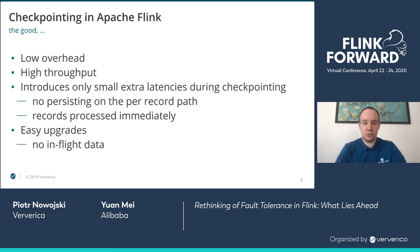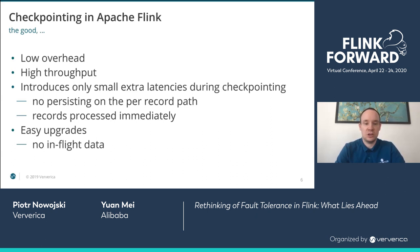There are multiple benefits of this approach. First of all, it has low overhead during normal processing, giving us very high throughput with no IO operations on the hot path per record — though this depends on the selected state backend. For example, RocksDB might induce some IO operations on the hot path. But in principle, fault tolerance in Flink doesn't require any additional IO operations on the hot path per record. Also, our fault tolerance mechanism introduces only minimal latencies for record processing.